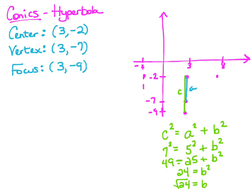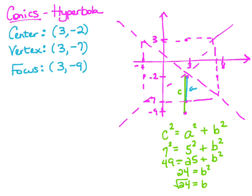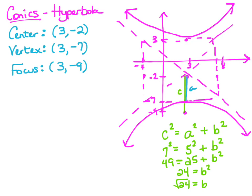With the hyperbola, we sketch this box. From the center we go up 5, putting us up at 3. We sketch that box, and we have our asymptotes that go through the corners of the box. Our hyperbola opens up and down because of the placement of the focus — we know it's a vertical hyperbola. And there's our graph.